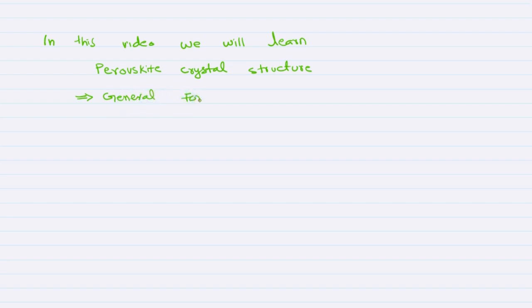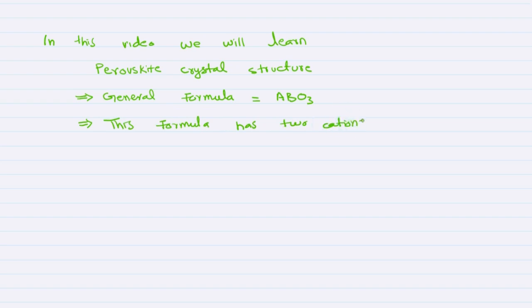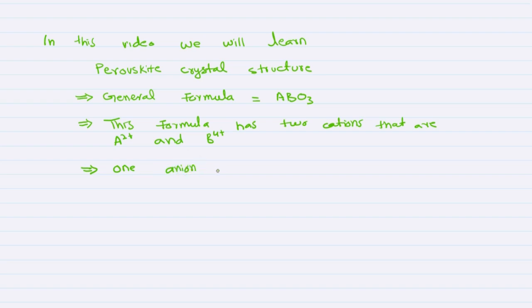The general formula for this structure is ABO3. This formula has two cations: A2+ and B4+, and one anion that is Oxygen O2-.